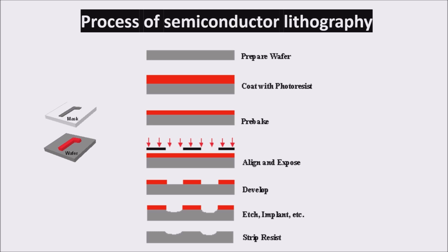In general, the various processes used to make an IC fall into three categories: film deposition, patterning, and semiconductor doping.